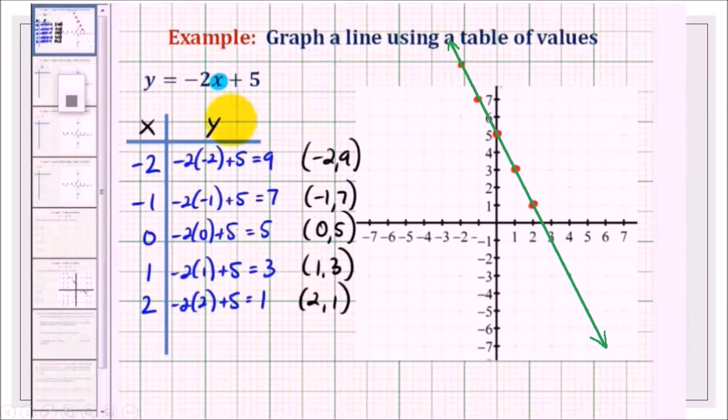So the graph of y equals negative 2x plus 5 is the line that passes through all these points. When drawing the line graph, put arrows on both ends to indicate that the line extends indefinitely to both directions. So this line is the graph of the equation y equals negative 2x plus 5.